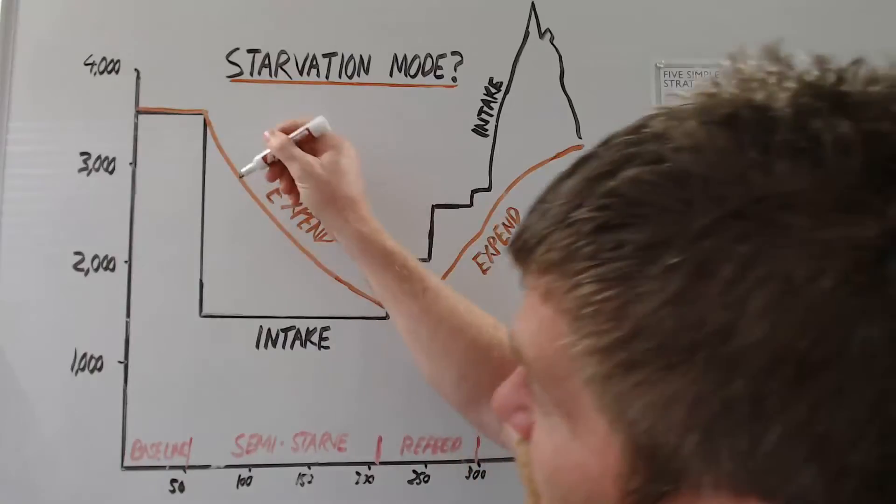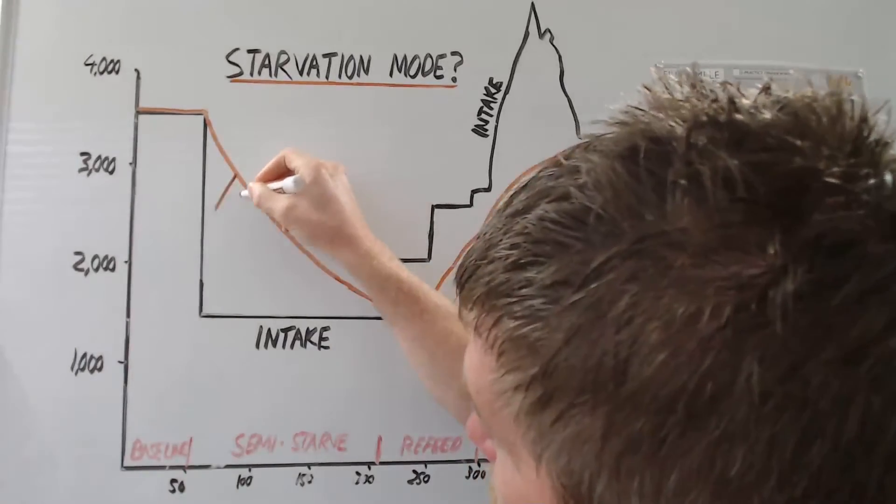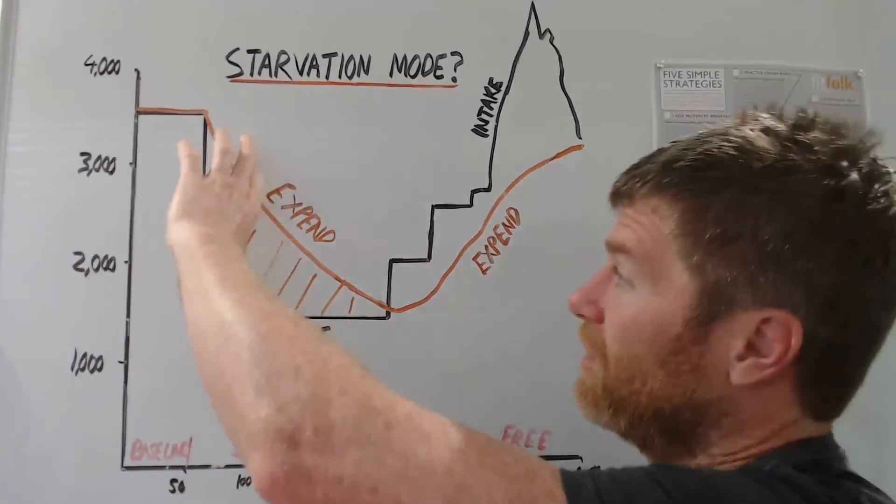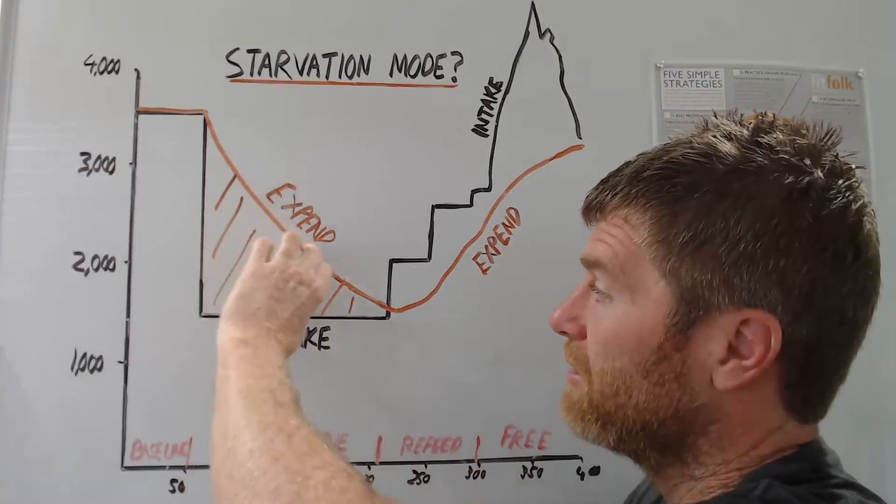So what we see here is this bit here, this is the deficit which is what is driving the fat loss. And what we see was that it just collapsed gradually.